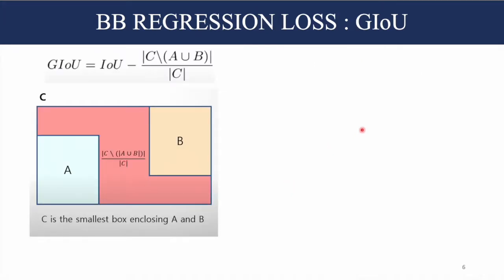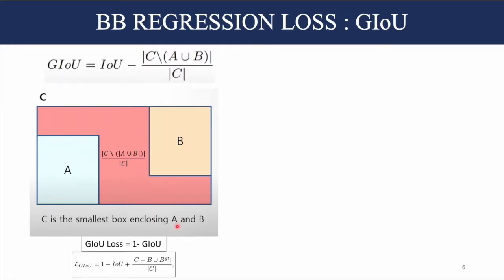To overcome this problem, another metric called GIOU (Generalized IOU) was proposed. In this formulation, A is the ground truth bounding box, B is the predicted bounding box, and C is the smallest box enclosing both A and B. The area C minus A∪B, divided by C to make it scale invariant, gives us the GIOU term as IOU minus this area. The GIOU loss is defined as 1 minus GIOU.